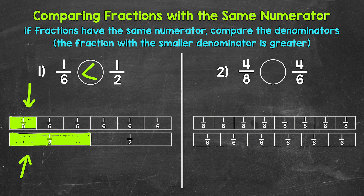Let's move on to number two, where we have four-eighths and four-sixths. So reading this from left to right: four-eighths is greater than, less than, or equal to four-sixths. Let's think about this and use these fraction strips. One of the fraction strips is divided into eight equal parts, and the other fraction strip is divided into six equal parts.